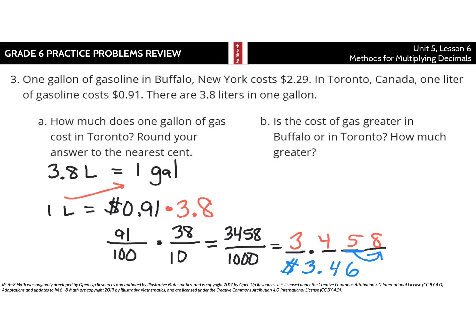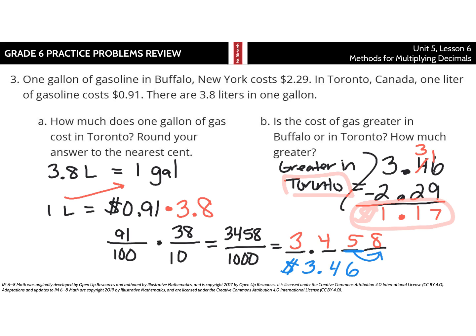Remember, 5 and above, give it a shove, round up. So, $3.46. Then, to finish our question, is the cost of gas greater in Buffalo or in Toronto? And how much greater? Well, Buffalo costs $2.29. Toronto, it costs $3.46. So, the cost is greater in Toronto. And to figure out how much by, we're going to go back to our subtraction of decimals. Remember, line up your decimal points. You have $3.46. Subtracting the $2.29. And so, to solve, unbundle that, take a dime away, bring it to the pennies. 16 pennies minus 9 pennies is 7 pennies. 3 dimes minus 2 dimes is 1 dime. $3 minus $2 is $1. So, then we have our final solution here of $1.17 more expensive in Toronto.